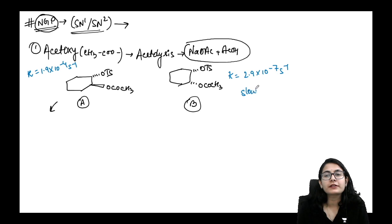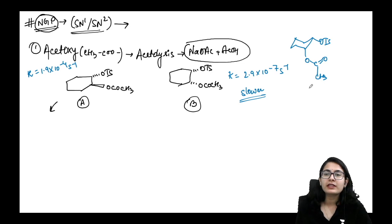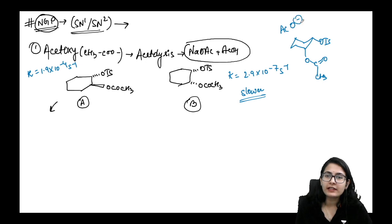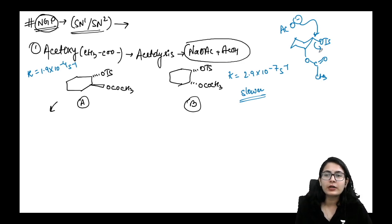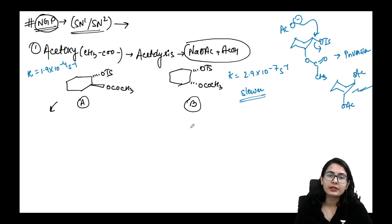Molecule B is slower. If you draw the cyclohexane conformation, the OTs and the acetoxy are on the same side, so NGP cannot occur. The external acetate nucleophile attacks axially, replacing OTs, giving the inversion product — a diaxial product. This is a simple SN2 reaction.